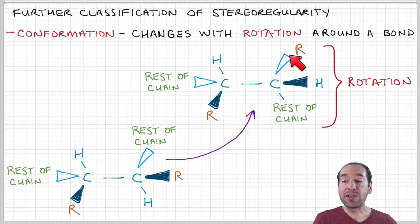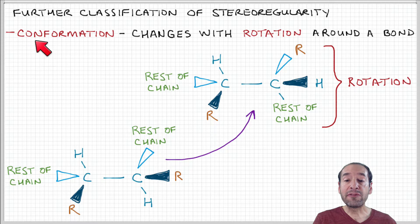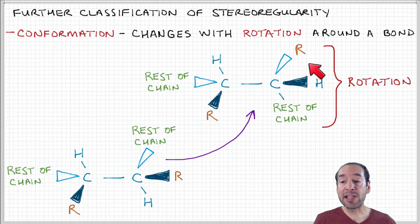And when I do that, those are said to be different conformations of the same chemical structure. Because they vary with a rotation about the carbon atom.